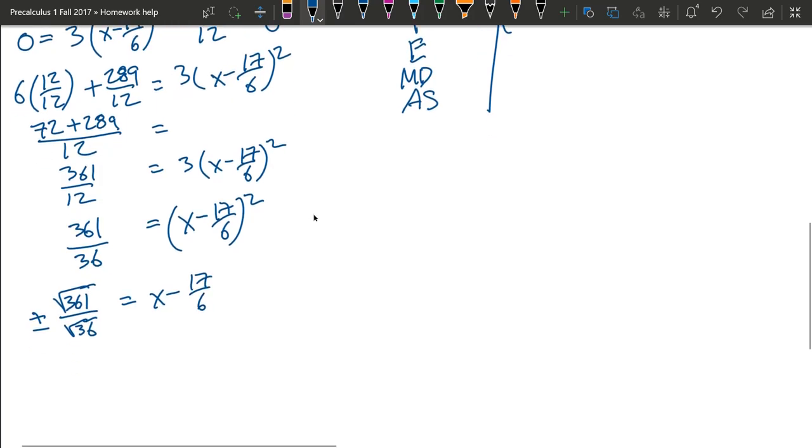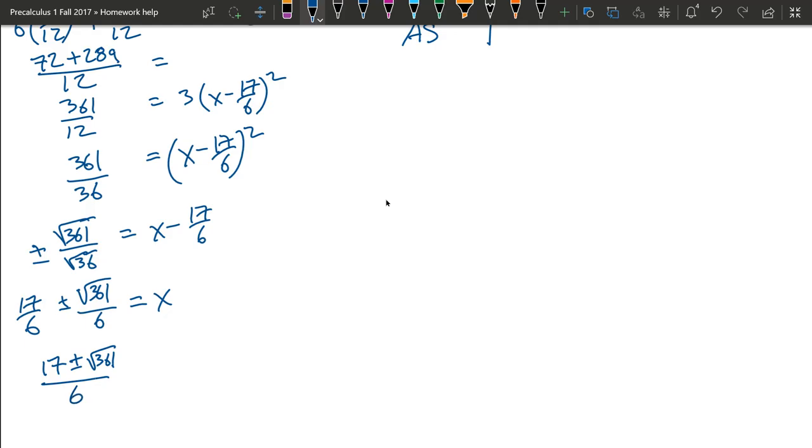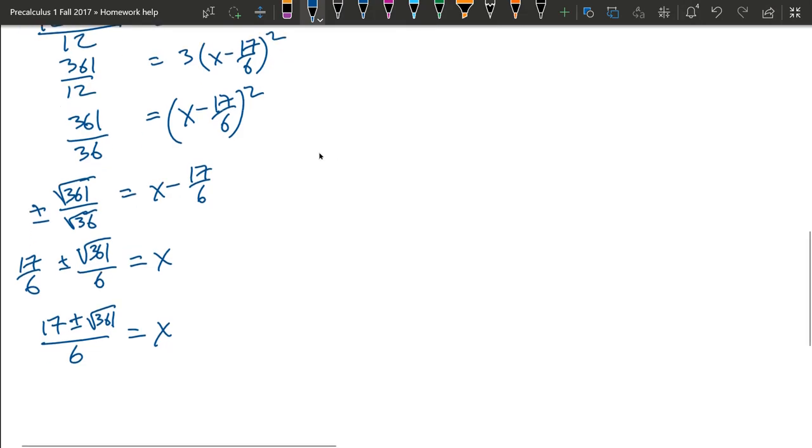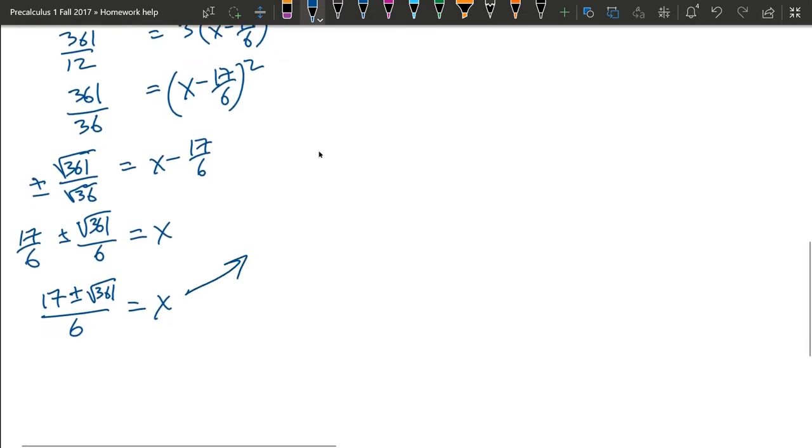And we're getting very close to finishing this. So we have plus or minus square root 361 over 6. And if we add 17 over 6, this is going to look a lot like your quadratic formula. I think your quadratic formula would have given you this right here.